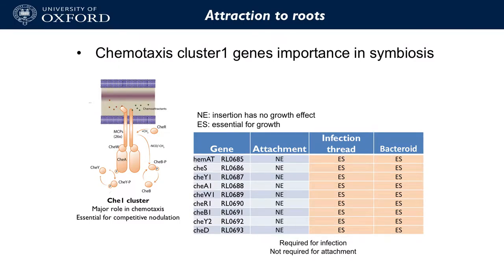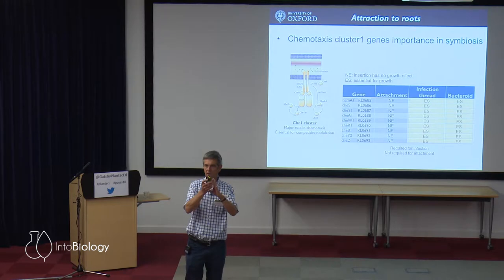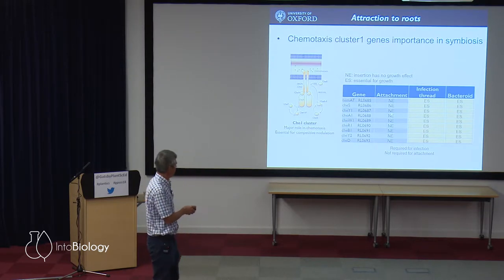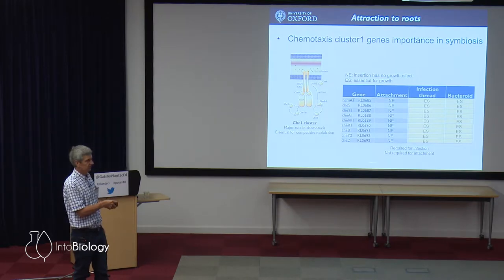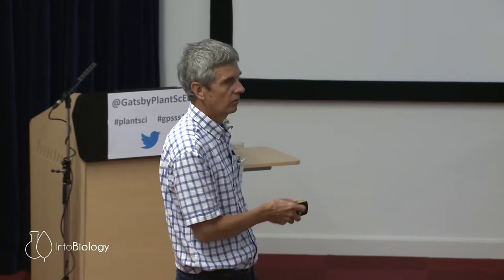It's pretty obvious you'd need chemotaxis and motility — recognising a gradient — for the bacteria to swim to the plant root. But when we actually used genetic techniques to measure this, it turned out to be neutral: you can knock out any of the chemotaxis or motility genes and have no effect on the ability to swim to and attach to the root. That was quite bizarre. It turns out chemotaxis is essential for bacteria to get into the infection thread and to make bacteroids, but not for that first attachment step.